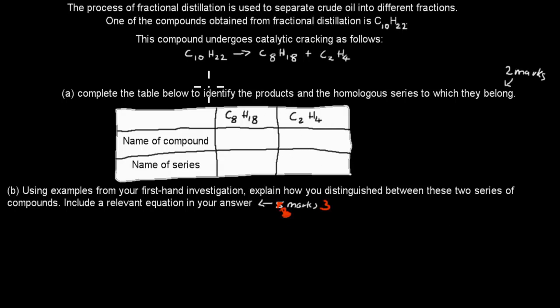Welcome back. Alright, so for the A part, all we have to do is identify the products, which were these ones here. So what are their names? And we have to identify the homologous series. These were the ones which we went over in this chapter: the alkanes and the alkenes.